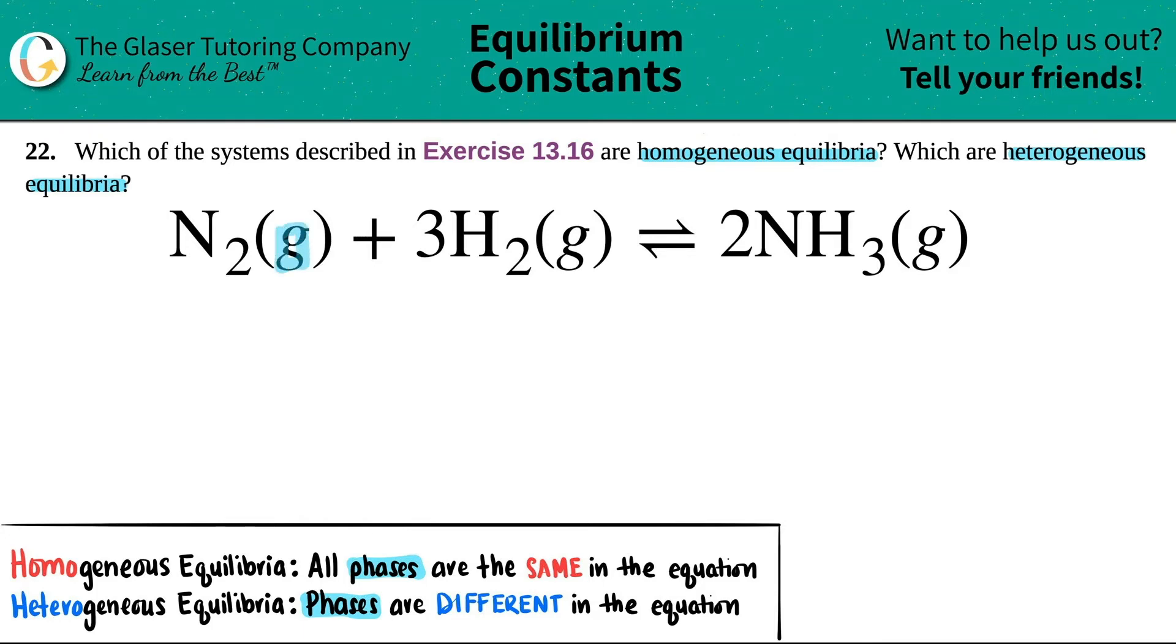And here I have a gas. And here I have a gas. This is a gas as well. Since all of these are exactly the same, all phases are the same throughout the whole equation, this would be a homogeneous equilibrium. So I'm just going to write down homogeneous.